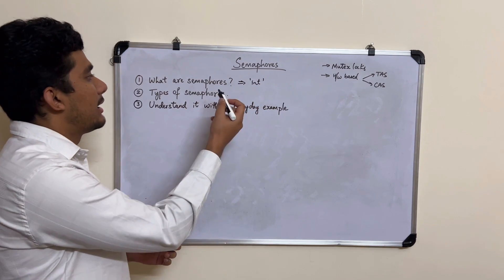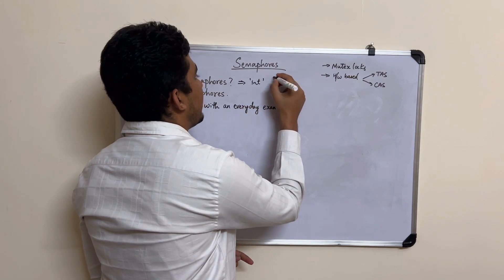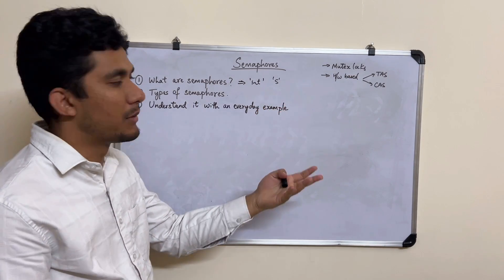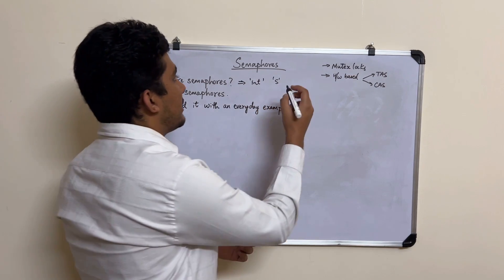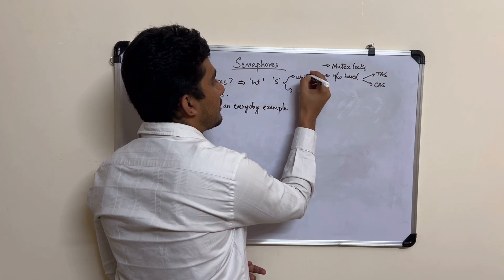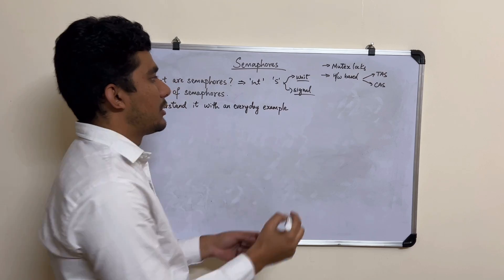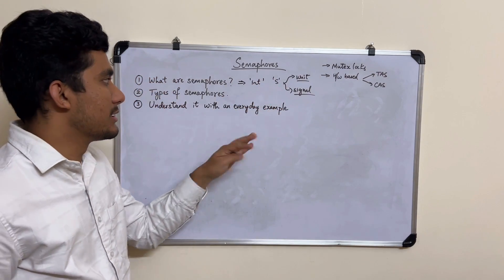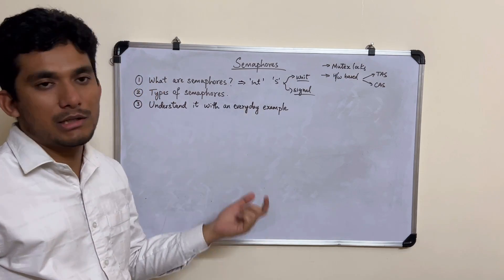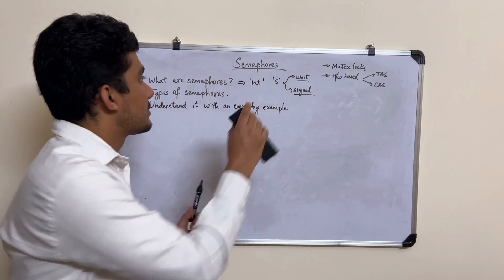Semaphores are nothing but integer variables — we'll call it S. Using this integer variable we can achieve process synchronization. It has two atomic functions called wait and signal, and based on these two atomic functions we can achieve process synchronization. We'll see how wait and signal are implemented and how we can use them.